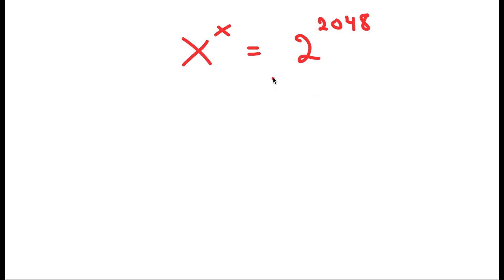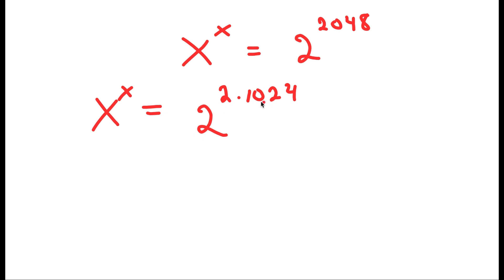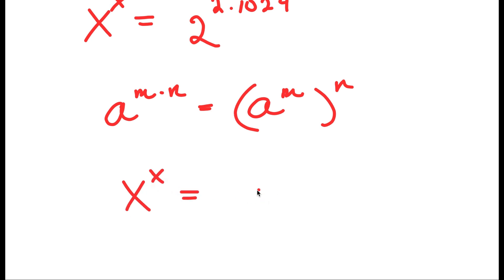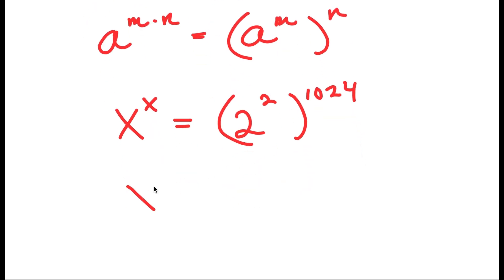To solve this, I'm going to start by writing 2 to the power of 2048 as 2 to the power of 2 times 1024. So x to the power of x is equal to 2 to the power of 2 times 1024. Using the property that a to the power of m times n equals a to the power of m to the power of n, I can rewrite this as x to the power of x equals 2 to the power of 2 to the power of 1024, which is 4 to the power of 1024.